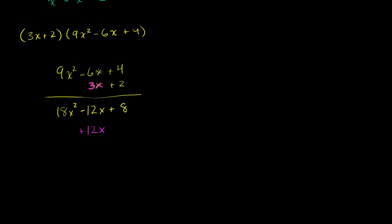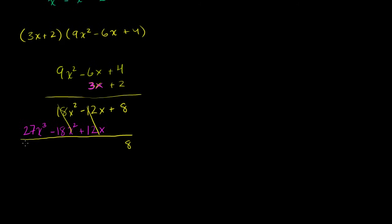Now the 3x part: 3x times 4 is positive 12x. 3x times negative 6x — x times x is x squared — gives negative 18x squared. Then 3x times 9x squared — x times x squared is x to the third — gives 27x cubed. Now add the like terms: 8 stays; negative 12x plus 12x cancel out; 18x squared minus 18x squared cancel out; leaving 27x to the third. So this equals 27x cubed plus 8.